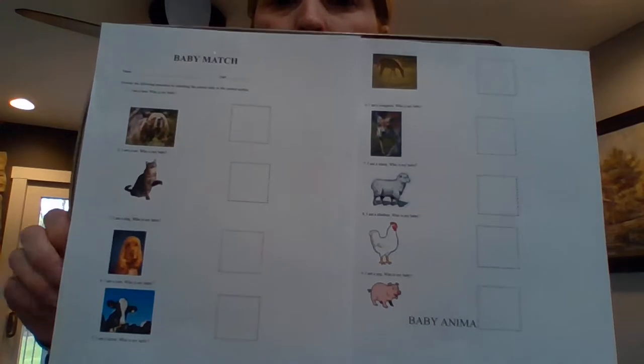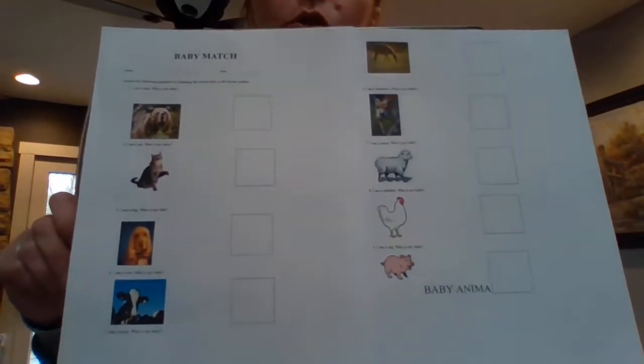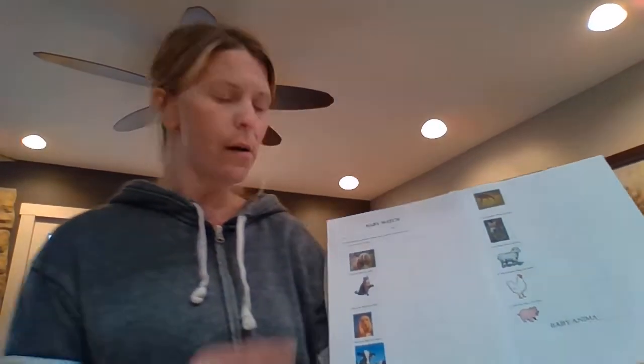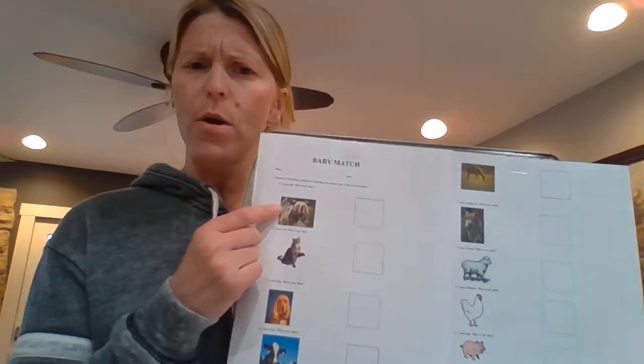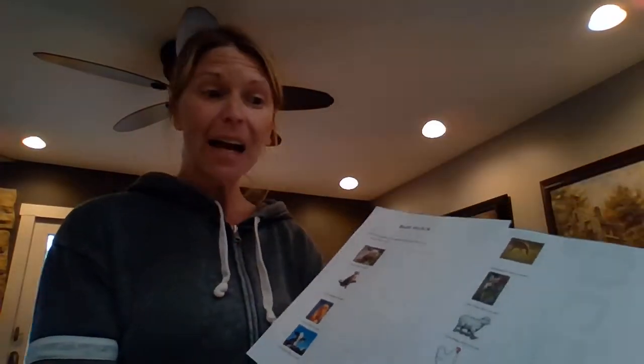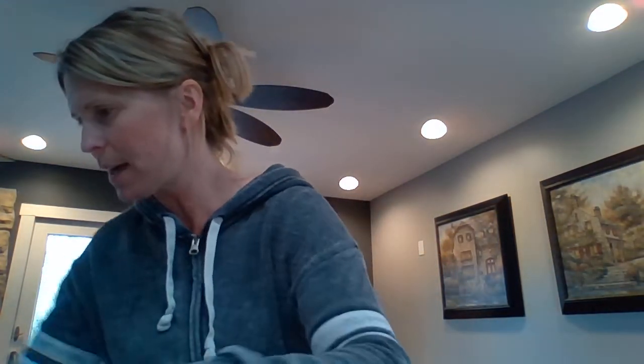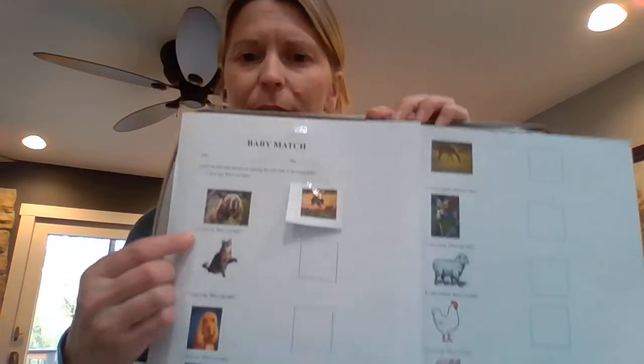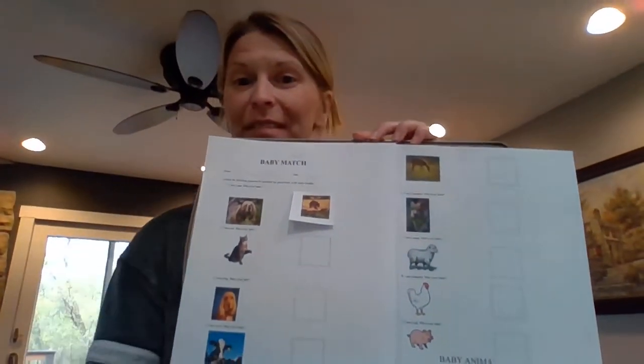We are talking about baby animals this week, and I have these sheets in your at-home learning so you can do them at home too. Could you help me get them all set up? A baby bear is called a cub — you've got it! And next I have a cat. What is a baby cat called? A kitten. Find your picture of the kitten and add it.